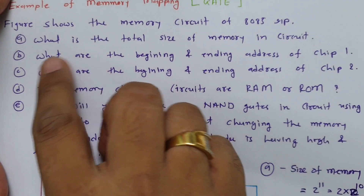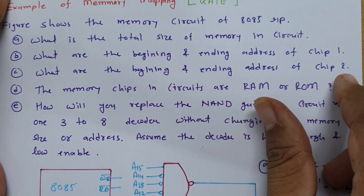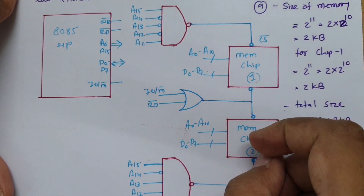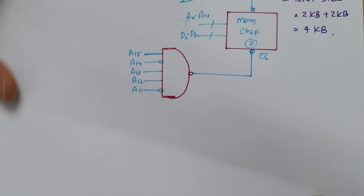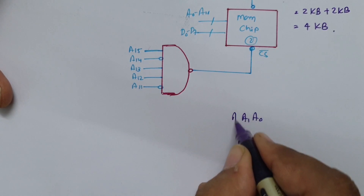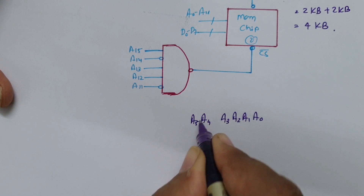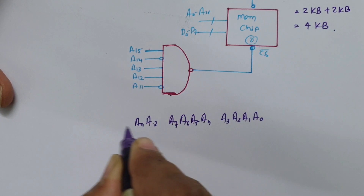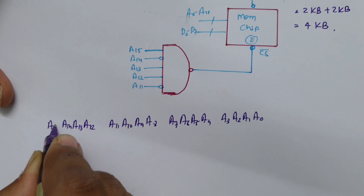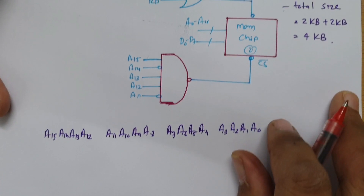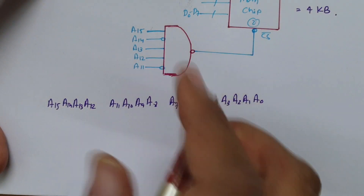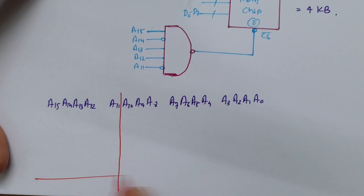Now for questions B and C — the beginning and ending address of chip 1 and chip 2. To find those addresses, we need to identify what is used for addressing and what is used for chip select. Let me write the address lines: A0, A1, A2, A3, A4, A5, A6, A7, A8, A9, A10, A11, A12, A13, A14, and A15. For both chips, A0 to A10 are used for addressing.